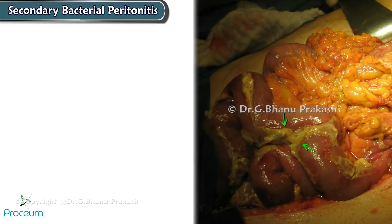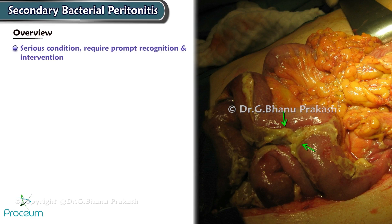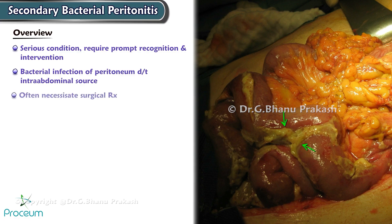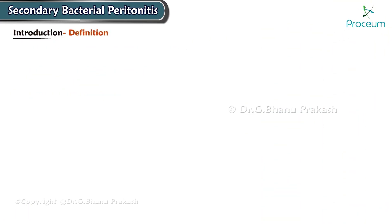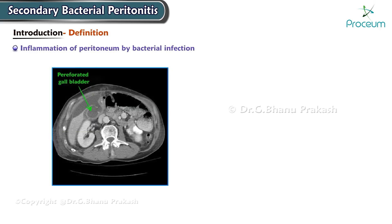Secondary Bacterial Peritonitis is a serious condition requiring prompt recognition and intervention. It stems from bacterial infection of the peritoneum due to an intra-abdominal source, often necessitating surgical treatment. Secondary Bacterial Peritonitis involves inflammation of the peritoneum caused by a bacterial infection that originates from an intra-abdominal source, requiring surgical intervention.